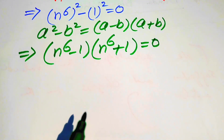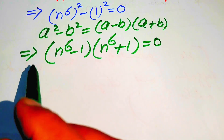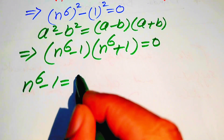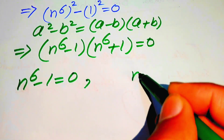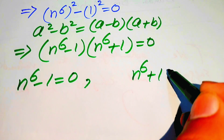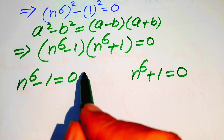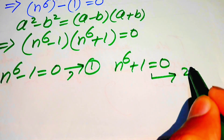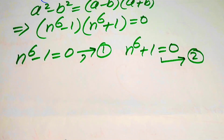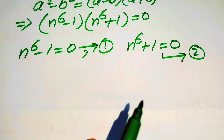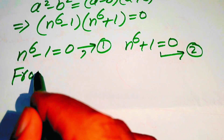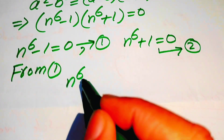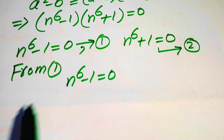Now we convert this equation into two cases. Case 1: n to the power of 6 minus 1 equals to 0 (equation 1). Case 2: n to the power of 6 plus 1 equals to 0 (equation 2). We solve these two equations one by one, starting with case number 1.